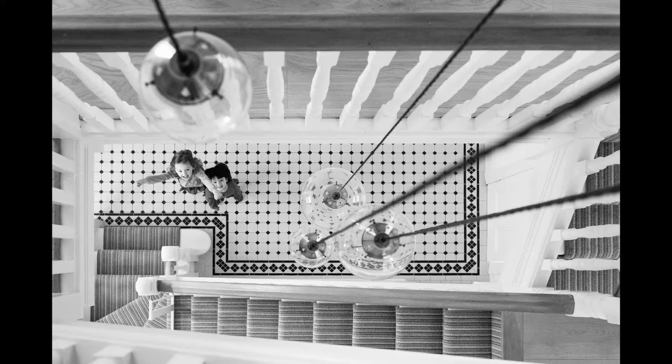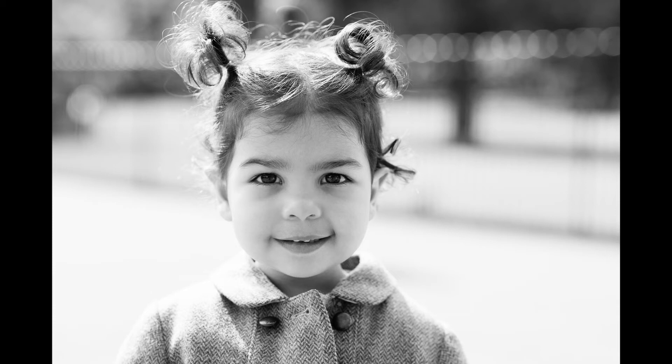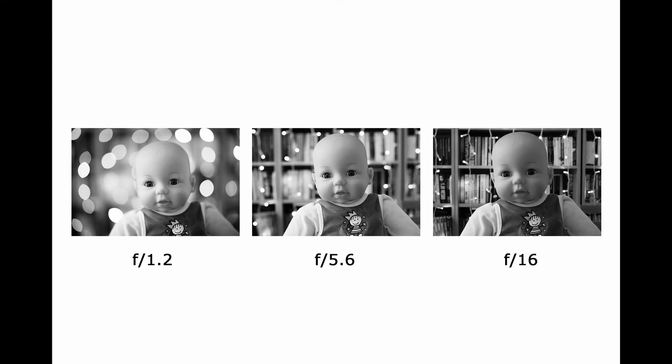But how does aperture affect our images visually in terms of depth of field? A small aperture gives us a greater depth of field — the image will be sharp from front to back. A wide aperture gives us a shallow depth of field — only a very thin area of the image will be in focus. The way to remember this is: small f number, small area of focus; large f number, large area of focus. As the f number gets smaller the depth of field is smaller and the blur becomes extreme.